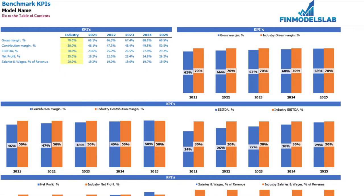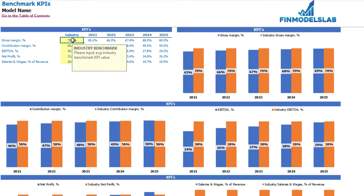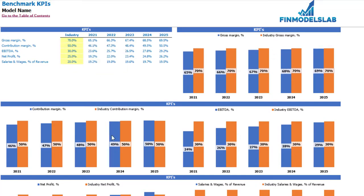On the benchmarks KPI tab you may compare your financial outputs with your industry benchmarks. You have five different benchmarks: gross margin, contribution margin, net profit, EBITDA, and salaries and wages as a percentage of revenue. In these cells you may see the values produced by the model after you set up all the drivers. In the yellow cells you can set up your industry benchmarks — for example, gross margin for your industry and country is 85%. Below you may see the same information in graphical form, with orange columns showing the industry values.